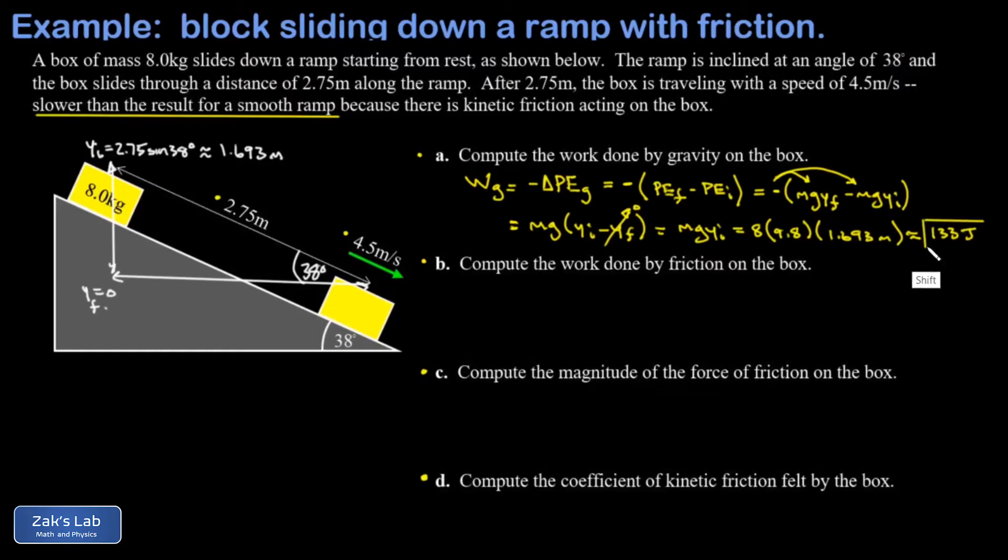In part b we want the work done by friction on the box. And what we have is the work done by gravity and we have the final kinetic energy. We also know this object started from rest so the initial kinetic energy was zero. And this is where we apply the work energy theorem. I know the net work done on an object is equal to the change in its kinetic energy. And the net work done on this object is a combination of the work done by gravity added to the work done by friction.